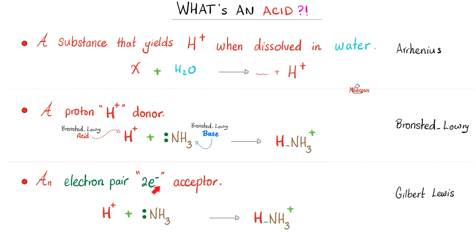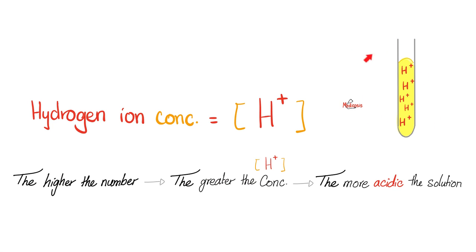An electron pair acceptor. See this? Became this. Now, who accepted the electrons? The H. That's why this is an acid.